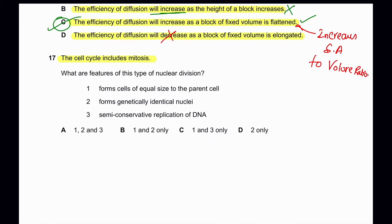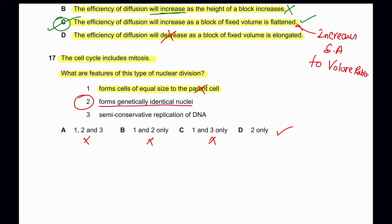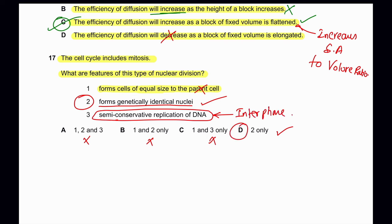Question 17: The cell cycle includes mitosis. What are features of this type of nuclear division? Mitosis does not produce daughter cells equal in size to the parent cell — so option 1 is eliminated, taking out A, B, and C. Mitosis forms genetically identical nuclei — this is correct. Semi-conservative replication of DNA takes place in interphase, not in mitosis. So only option 2 is correct, and D is the only correct option.